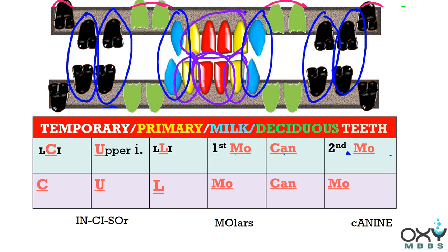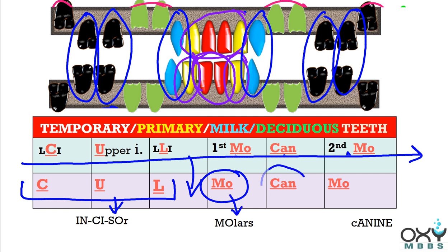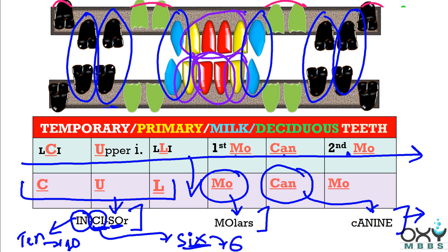Now you may wonder at what age these teeth appear. First, all these are incisors — write 'incisor' here. These are molars — write 'molars' here. And this is K9 — write K9. Now incisor, molar, K9 will themselves tell you at what age they appear. For example, the C-I in 'incisor' tells you 6 — because the pronunciation of 'six' and 'C' are very similar. The pronunciation of '10' is more similar to 'I-N' — so here comes number 10. From S-O in 'incisor,' you can derive number 7 — so here comes number 7.